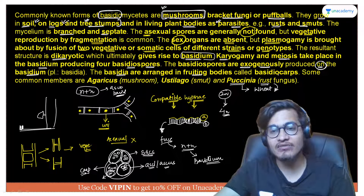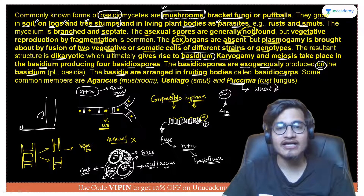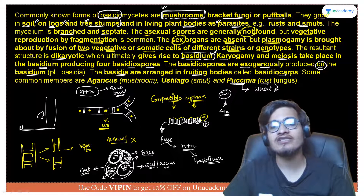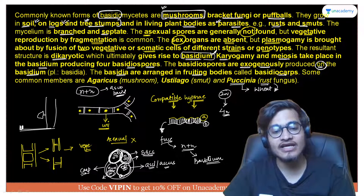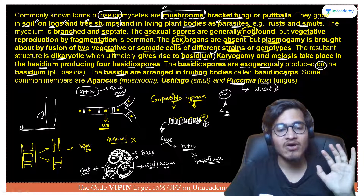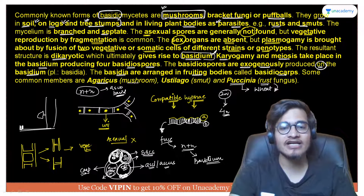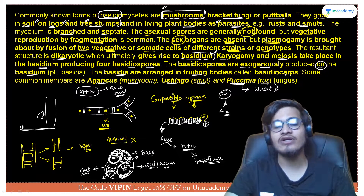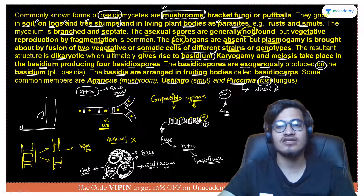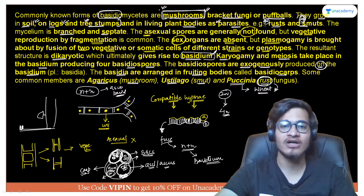Basidia are arranged in the fruiting body — the basidiocarp. So in place of ascocarp you have basidiocarp, in place of ascus you have basidium, and in place of ascospores you have four basidiospores produced exogenously — that is, on the tip of the basidium. Ascospores were produced inside (endogenously), but here they develop on the basidium. Common members include Agaricus (mushroom), Ustilago (smut), and Puccinia (rust), which acts on wheat. Rust and smut both fall under Basidiomycetes, along with bracket fungi, puffballs, and mushrooms.